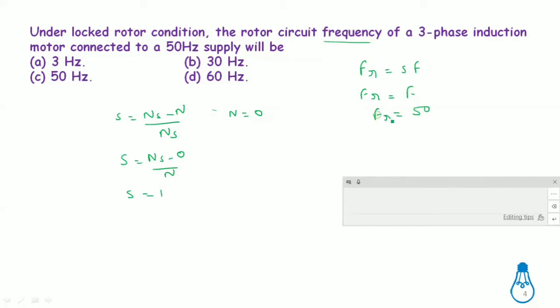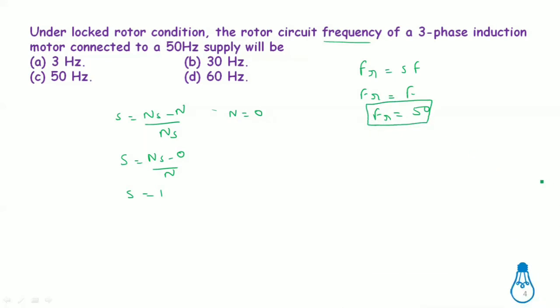So the rotor frequency equals the supply frequency of 50 Hz, and this is the correct option.